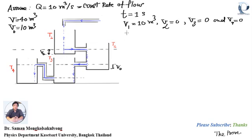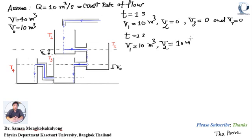At t equals 2 seconds, V1 has a volume of water equal to 10 mq — the water is at this level — and for tank 2, V2 equals 10 mq, V3 equals zero, and V4 equals zero.